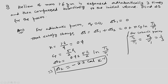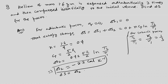Substituting: delta S_2 equals 0.4 times 5R/2 times ln(1/3), giving approximately minus 2.2 calorie per Kelvin. Therefore, delta S total equals minus 2.2 calorie per Kelvin.